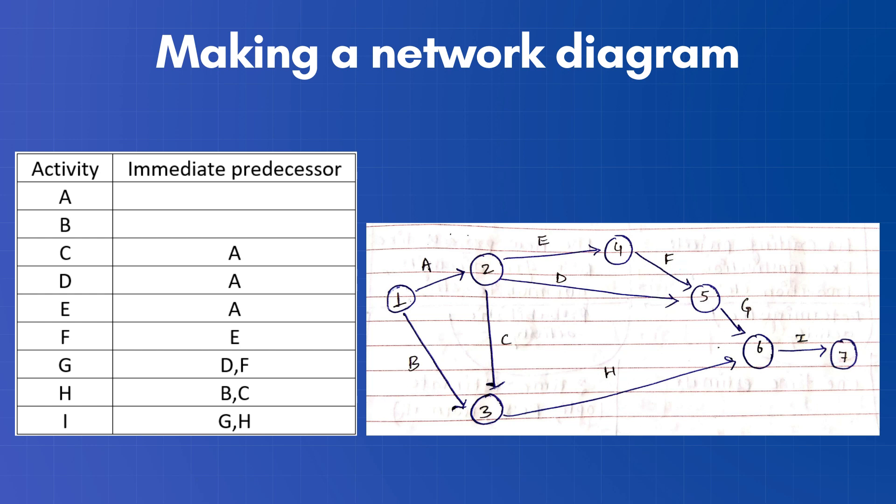By looking again in the table, we find out that activity D and F are the predecessors of activity G and we have already defined activity D and F in the network diagram. So activity D whose start event was at event 2 and activity F whose start event was at event 4 will have a common end event at event number 5 from which activity G can now proceed.